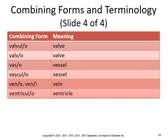Valvula means valve — valvuloplasty is the surgical repair of a valve. Valvulitis is inflammation of the valve, such as the mitral valve. Vas means vessel — vasoconstriction is narrowing of the vessels and vasodilation is widening of the vessels.